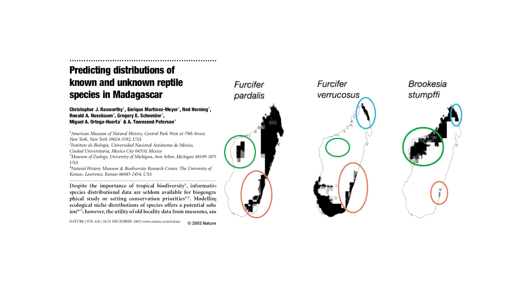A classic paper I'd refer you to is Chris Raxworthy and colleagues from 2003 in Nature, one of the first examples of trying to accelerate the discovery of known and unknown species — these were reptiles in Madagascar. My postdoc, when I finished my PhD and moved to New York to work at the American Museum of Natural History, was part of my work to follow on from this project. What I'm going to tell you about is some work that's actually still unpublished — a follow-up to that paper, so slightly more recent work.